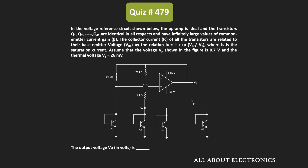In this question, we have been given that all the transistors are identical and they have a very large value of the common emitter gain β. We have also been given the relationship between the base emitter voltage VBE and the collector current IC. The voltage at node VP is equal to 0.7V and the thermal voltage is equal to 26mV.